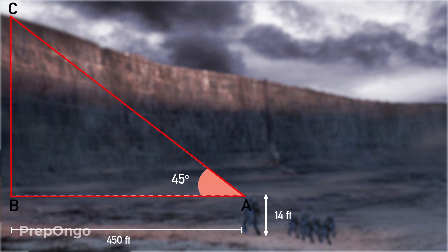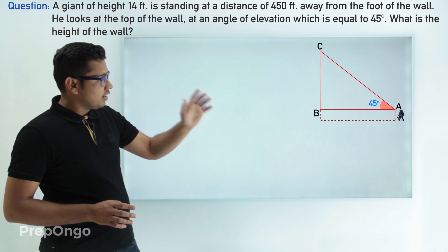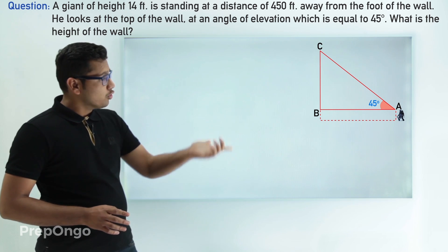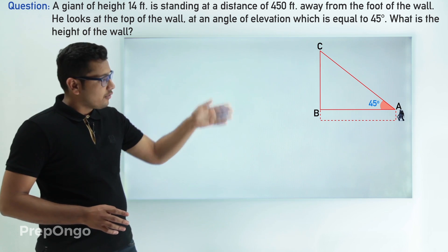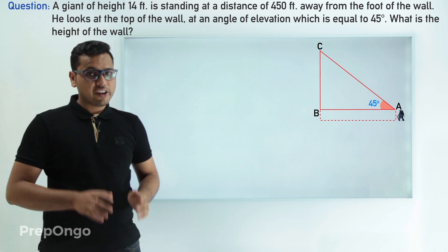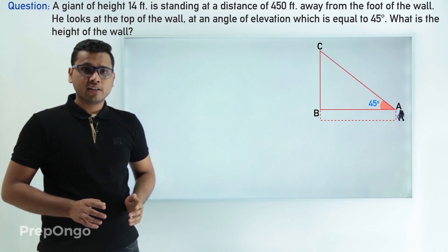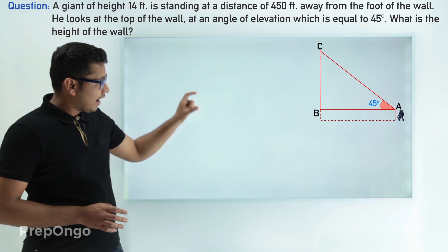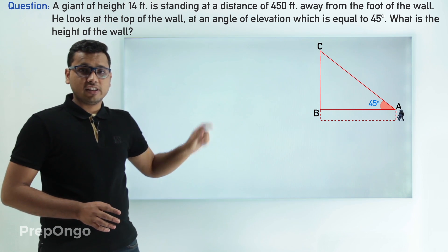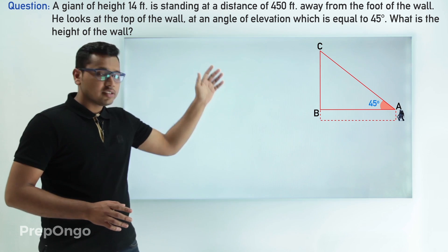So we can say that in triangle ABC, angle A is given to be 45 degrees and we have to find the complete height of the wall. In this triangle we know the value of the adjacent side and one angle is given to us. We have to find the length of the opposite side. So we can use trigonometric ratios to find this length, and then to find the height of the wall we will also have to add the height of the giant.